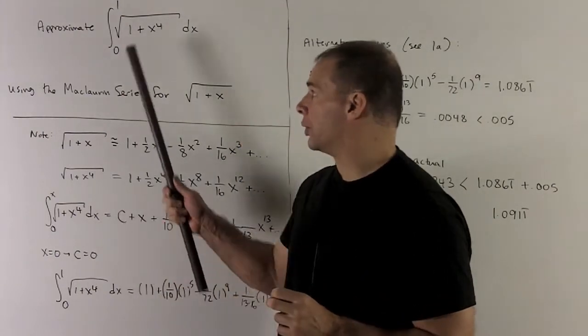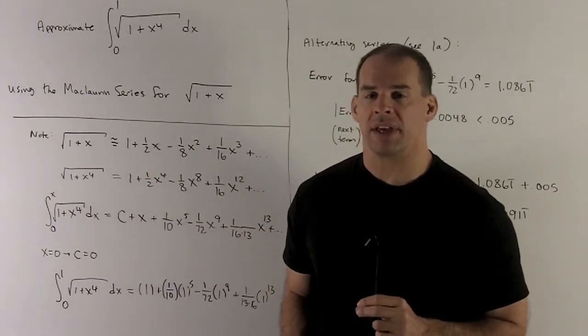Approximate the definite integral from 0 to 1 of square root of 1 plus x to the 4th, dx.